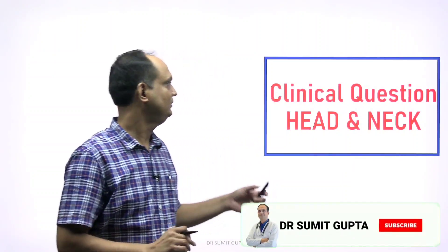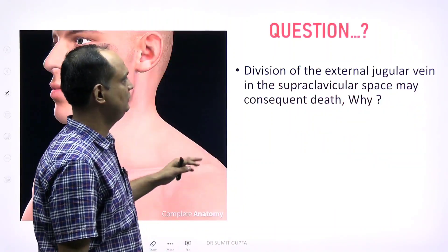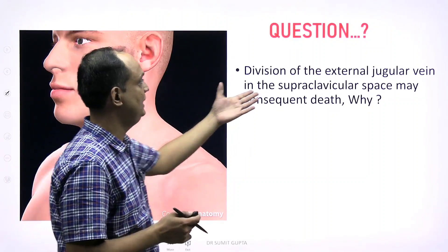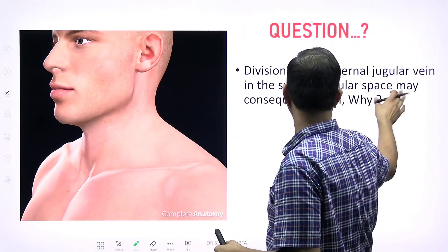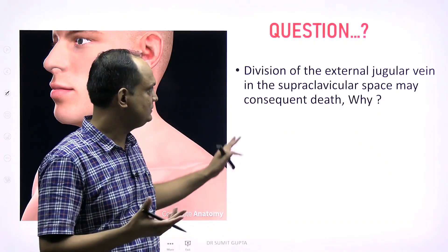Hello friends, today I will discuss a very important clinical question of head and neck. We will correlate this part with our knowledge of the thoracic diaphragm. The question is: division of the external jugular vein in the supraclavicular space may consequent death — why?